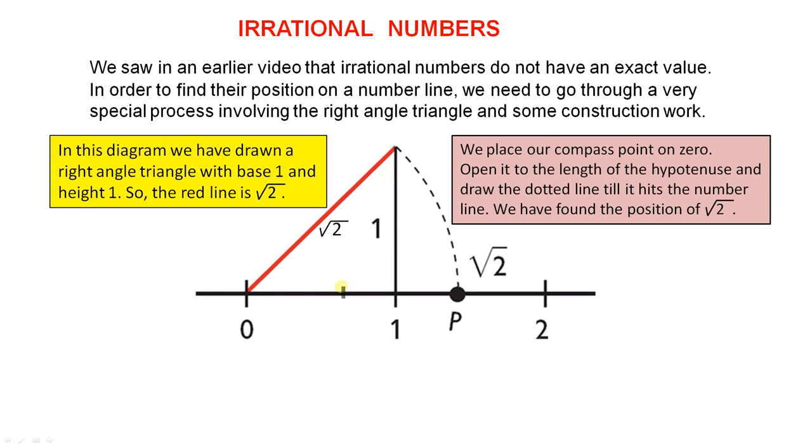Now here is the diagram we're going to use. Let's see what it involves. In this diagram, we have drawn a right angle triangle with base one and height one. So the red line is the square root of two. So using Pythagoras' theorem, you can find the length of this red line and it will be the square root of two.